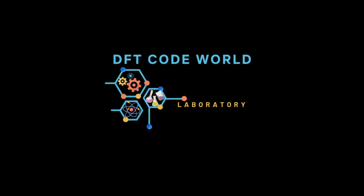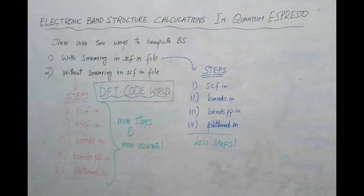There are two ways to compute the electronic band structures in Quantum ESPRESSO. The first way is to provide the smearing in the SCF.in file. Smearing is basically the occupation of electrons in a system. The second method is without smearing in the SCF.in file.